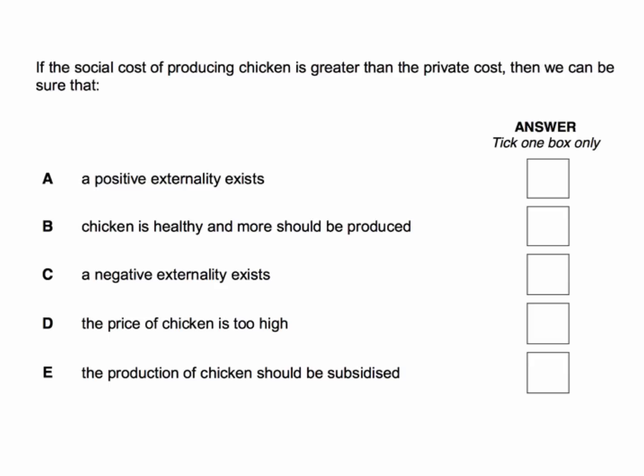Keep in mind that social cost is the private cost of production plus any external cost. And we're told that the social cost is greater than the private cost of producing chicken. So therefore, there must be an external cost of supplying chicken to the market.